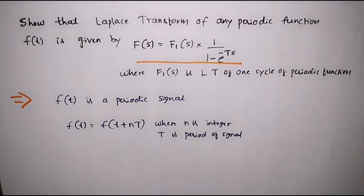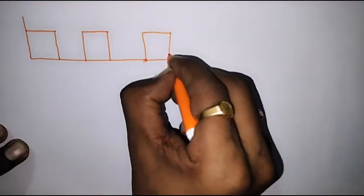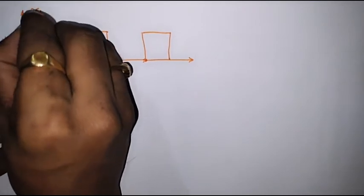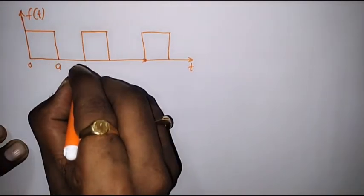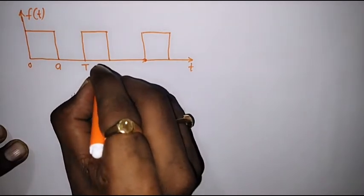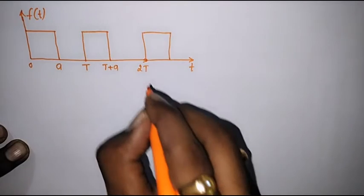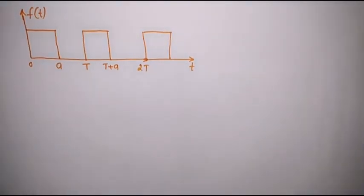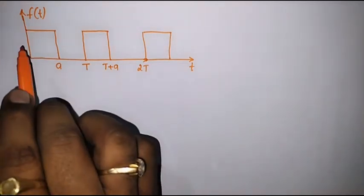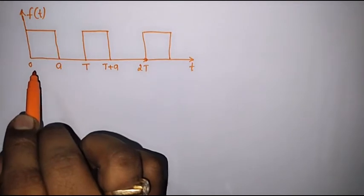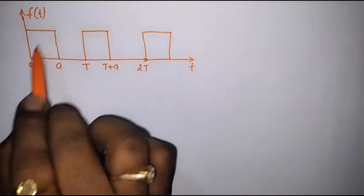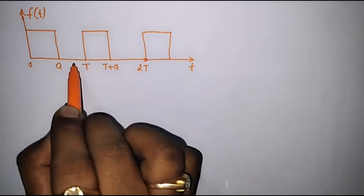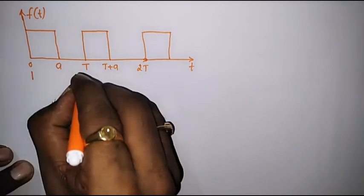Now let us consider one periodic signal. Let this be f(t). The signal has a value starting at 0, with a pulse present from 0 to a, and then from a to T its value is 0. We can observe that this signal is a periodic signal with period T.